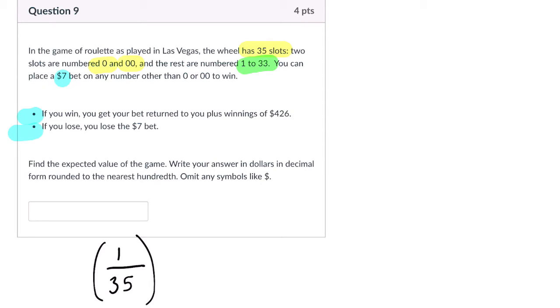Now, the way I'm going to count this, when you win, what are they going to hand you back? Well, you're getting the $426 plus the $7 bet, so it's $433.